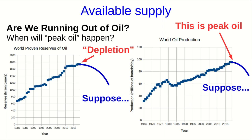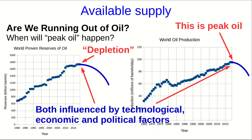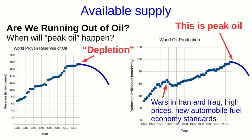Depletion and peak oil are very likely to be connected, and one could well bring about the other. But these are both as likely to be brought about by economic and political factors as they are by reductions in the supply of oil in the ground. As an example, peak oil has already actually happened once in the past — in 1979 — and it was caused by war, high prices, and fuel economy standards for cars.